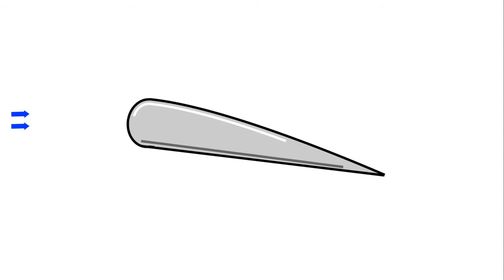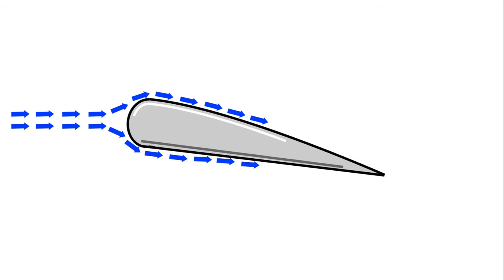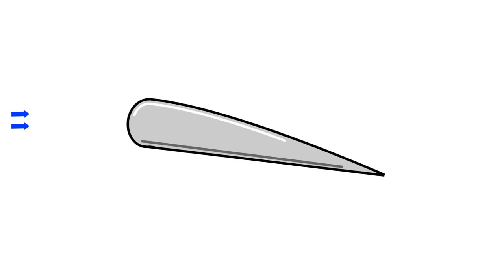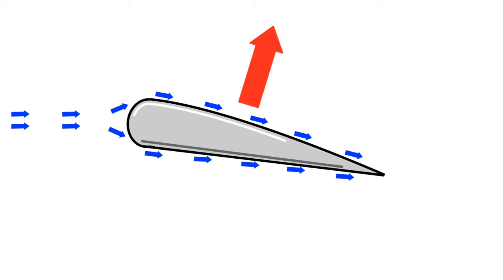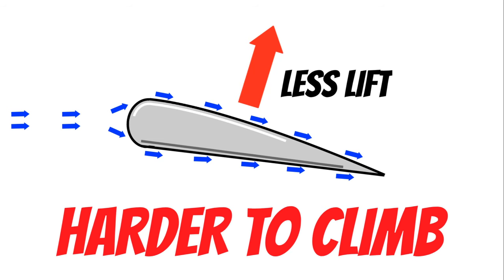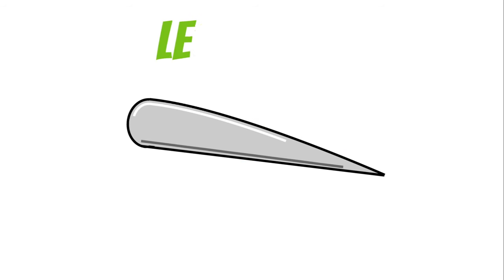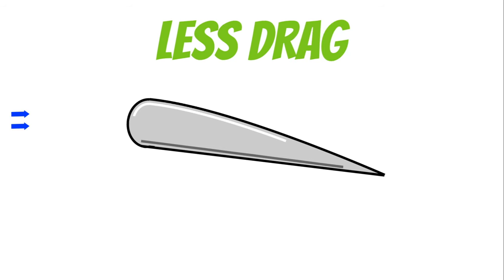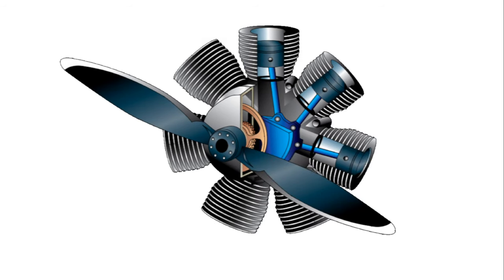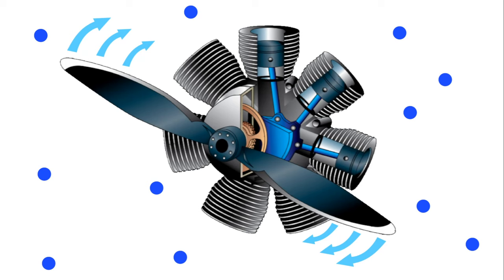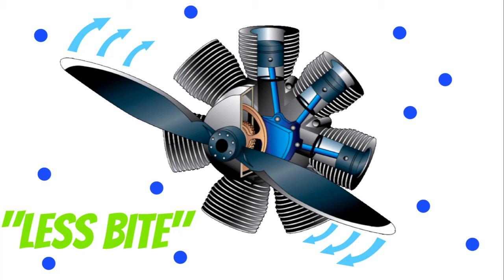Next, our wings need air molecules flowing over and under them to create lift. At higher pressure altitudes, there are fewer air molecules going over the wings, so your wings can't produce as much lift — making it a lot harder to climb. There is less drag on the airplane so it is possible to travel faster through the air, as long as your engine can produce enough thrust. Last but not least, high pressure altitude affects our propeller — there's less air for the propeller to push the airplane forward. The propeller can't get quite as much bite on the air when it's thinner at these higher altitudes.